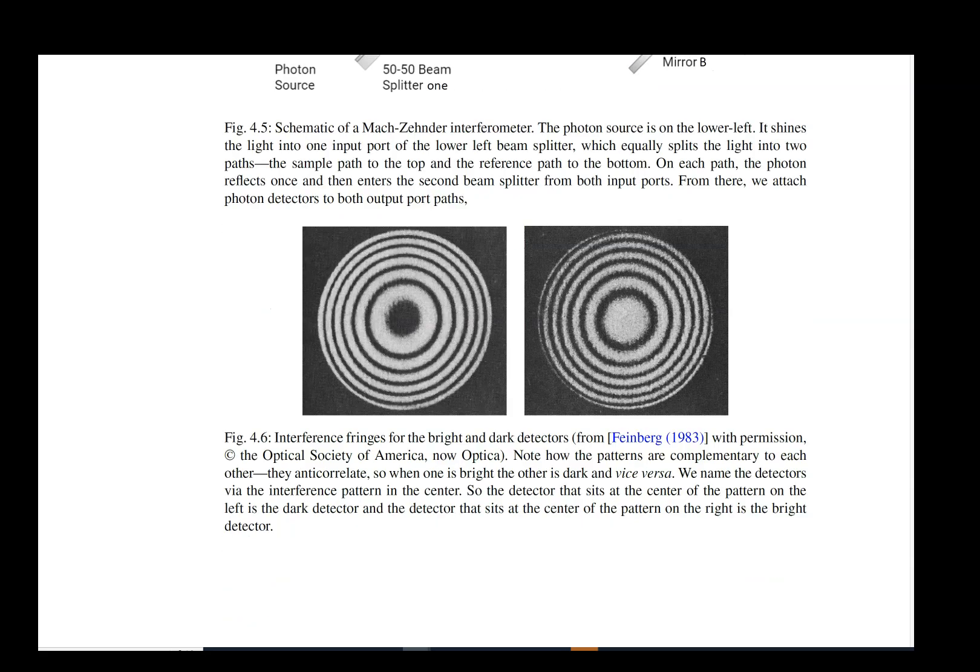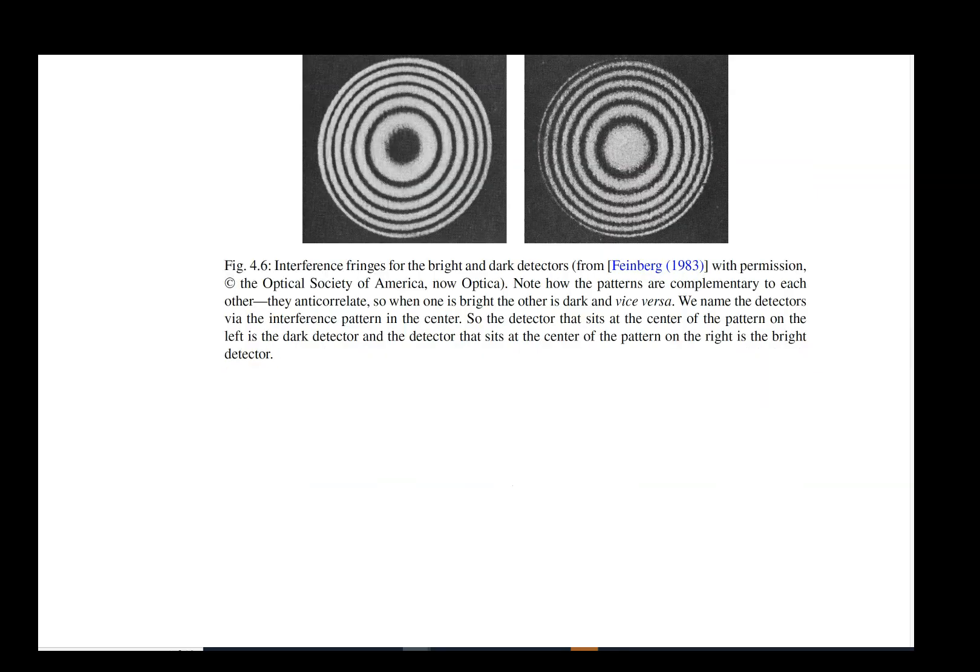In this case the one here on the left is the bright detector because it has a bright spot in the center, and the one on the right is the dark detector because it has a dark spot in the center.